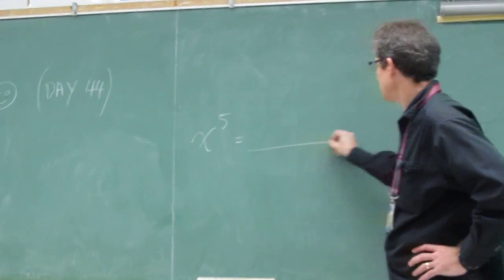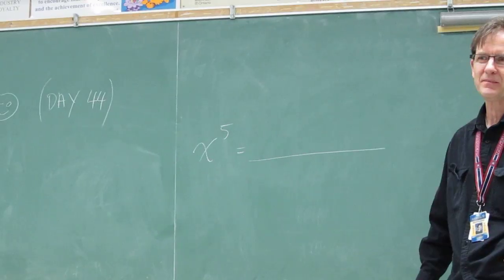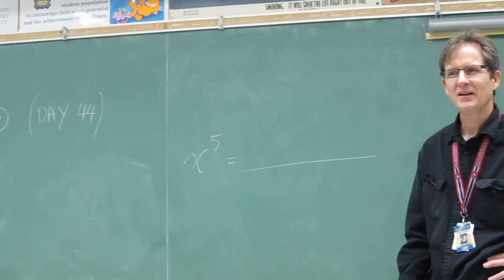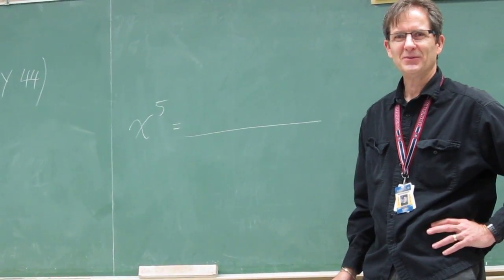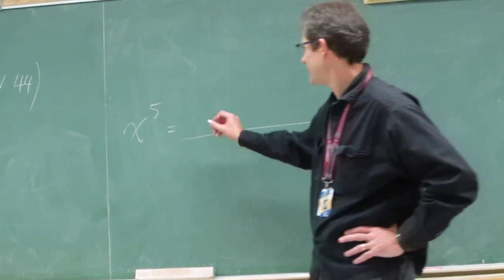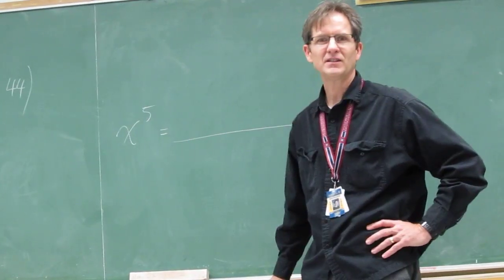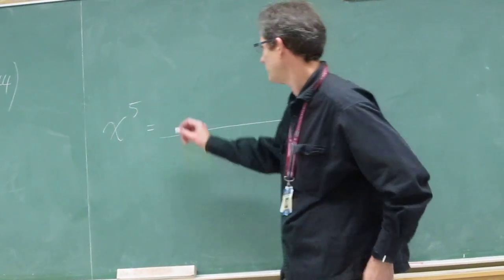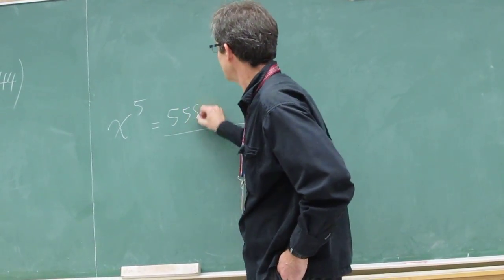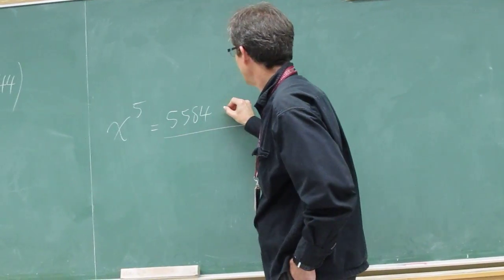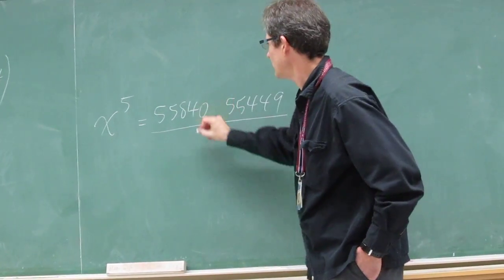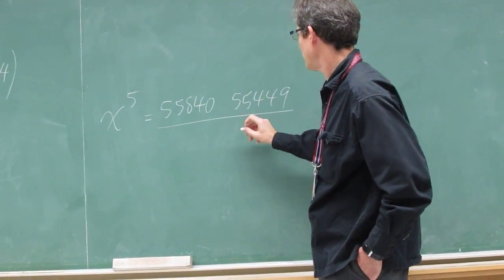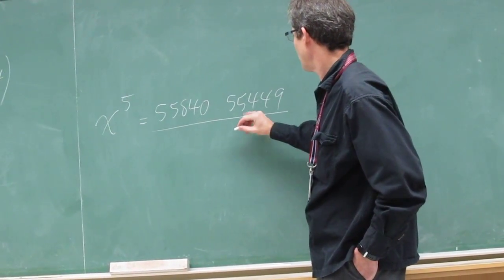If you give me the answer, I'll tell you what your number was. All right, so pick a number, any number. I've got, can I just list the digits instead? Yeah, just list the digits. 5584059449. I think I missed part of the middle. 5584059449.